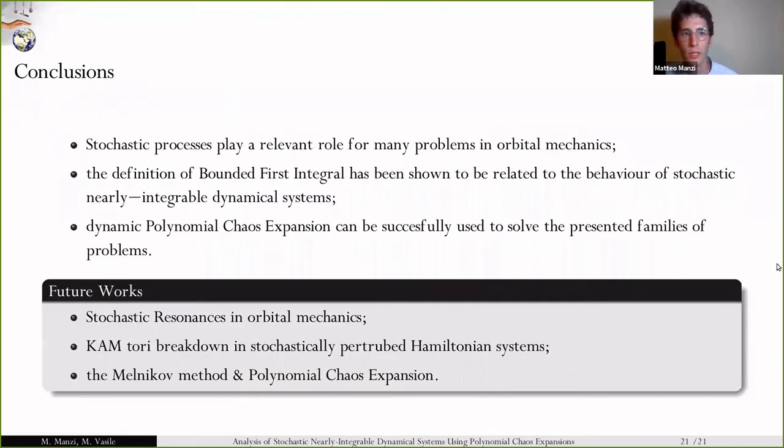In conclusion, stochastic processes play a relevant role for many problems in orbital mechanics. In the paper, we show how the bounded first integral can be related to the behavior of stochastic nearly integrable dynamical systems, and how a number of indicators can be used to assess this. Finally, it was shown how dynamic polynomial chaos expansion can be used to solve the proposed family of problems. In future works, we will look into stochastic resonances in orbital mechanics, and in application of the Melnikov method coupled with the polynomial chaos expansion.